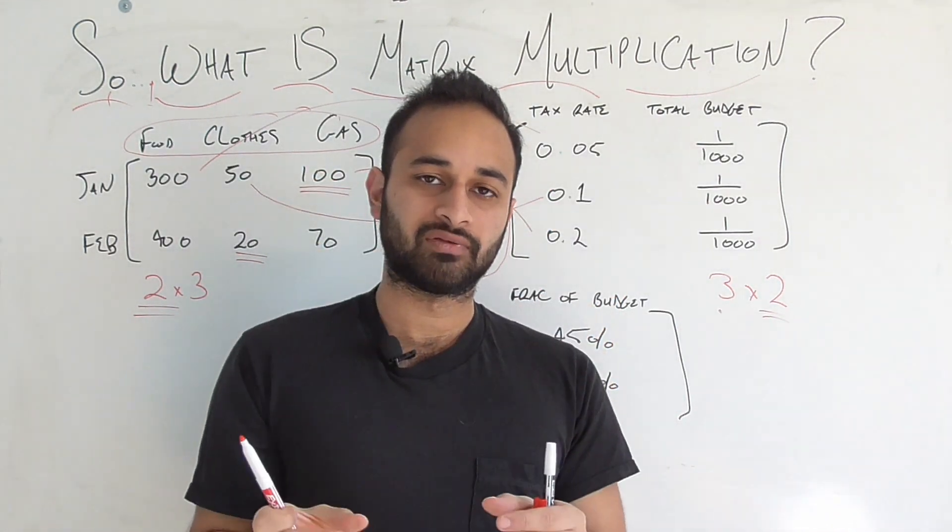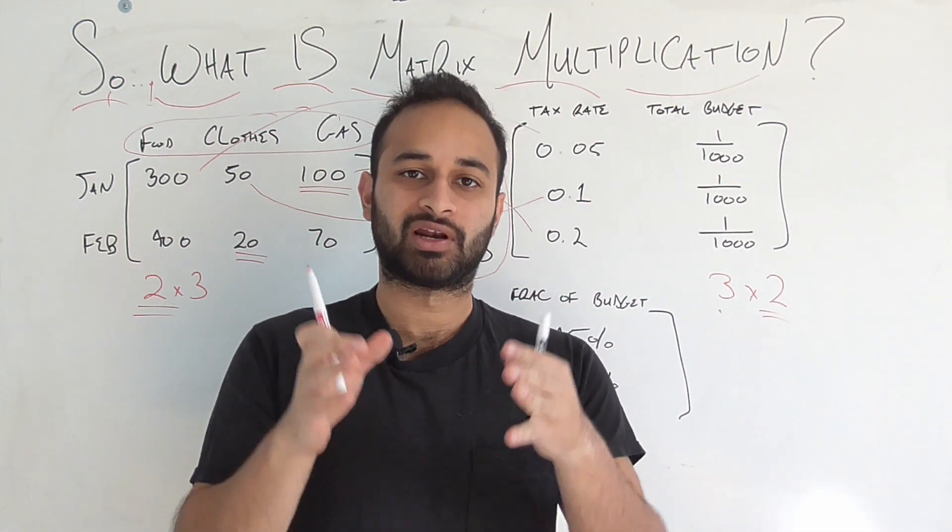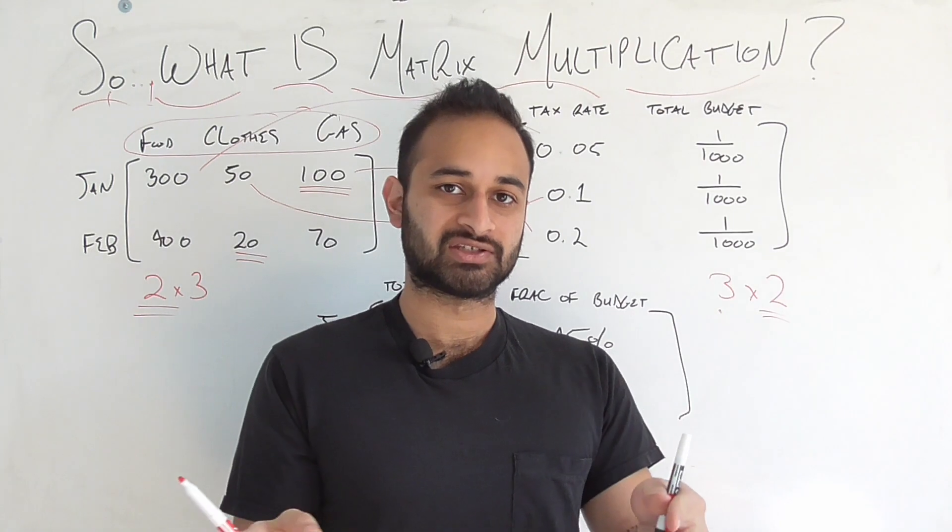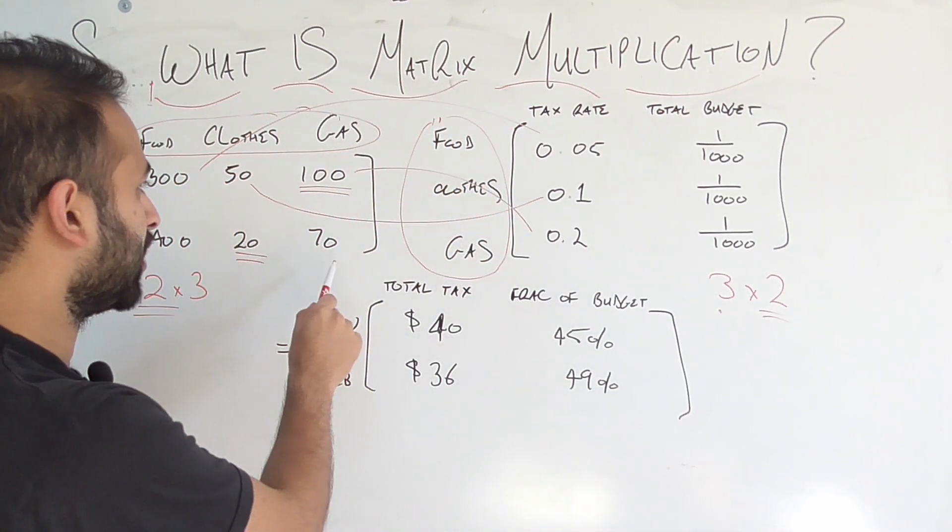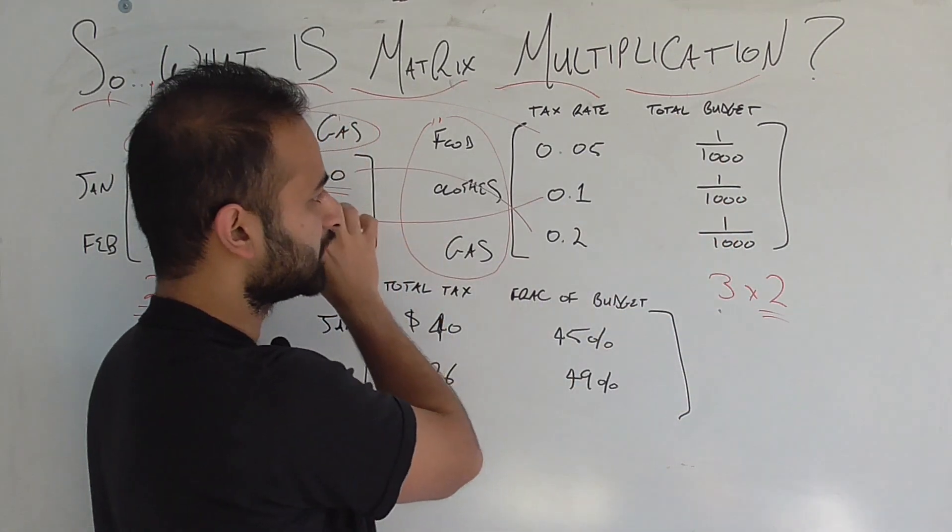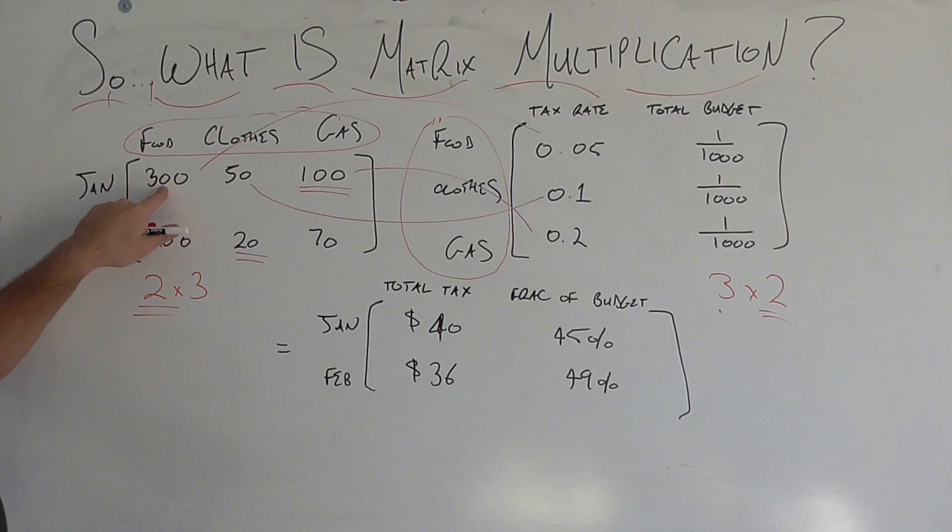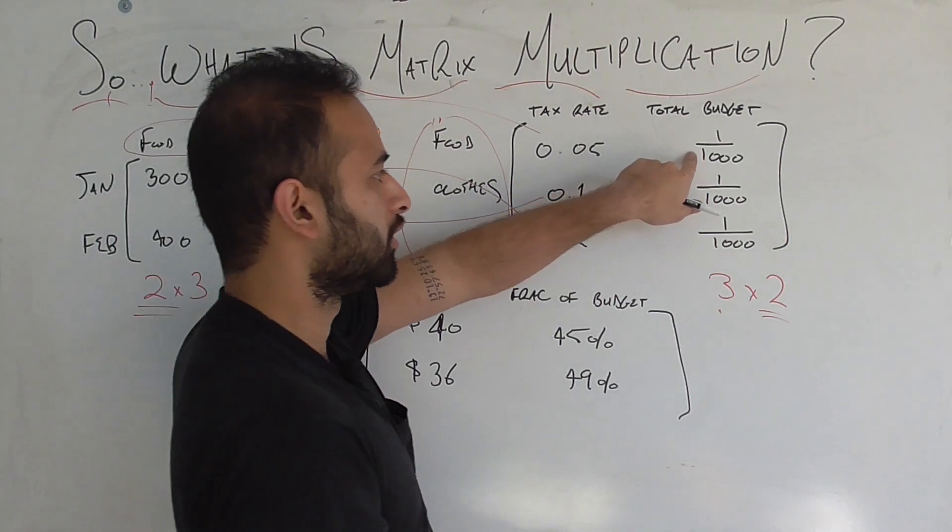Because we take each category, the amount of spending, multiply it by the tax rate for that category, and we're going to get the total amount of money you spent on taxes. And that'll be the same for February. How do we interpret this second column when we multiply entries with the second column? Well, for example, we will take $300 spent on food, multiply that by 1 over a thousand.